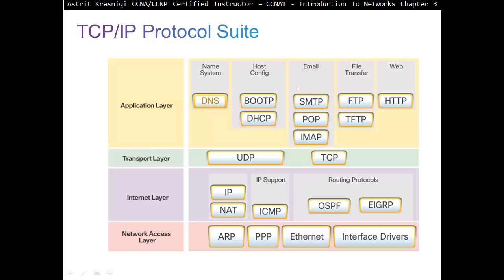For email there are three protocols at the application layer. SMTP — Simple Mail Transfer Protocol — is for sending emails. POP3 is for receiving emails, and IMAP is for receiving emails as well. Both POP and IMAP receive emails, but POP deletes the email from the server once you receive it, while IMAP keeps the email on the server — you can think of IMAP as synchronizing email with the server rather than downloading it. To delete emails with IMAP, you have to manually go to the server and delete them yourself.